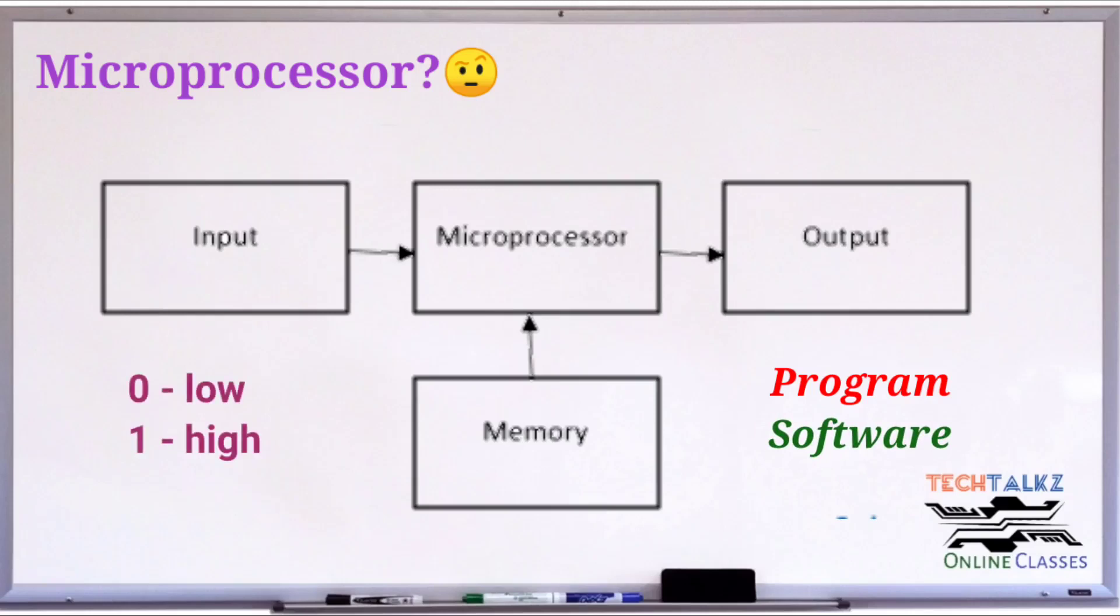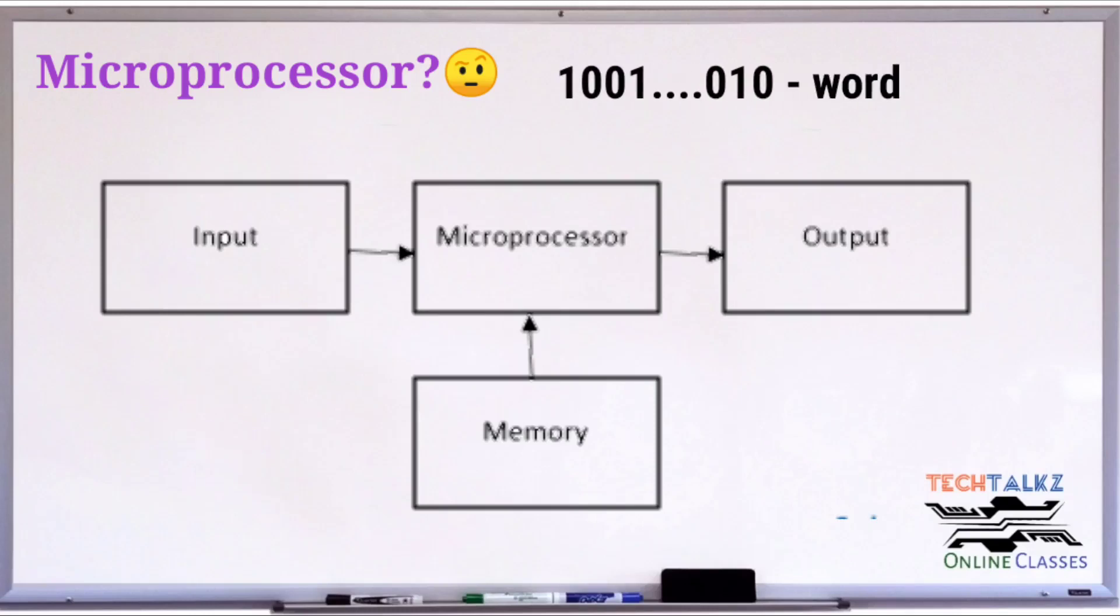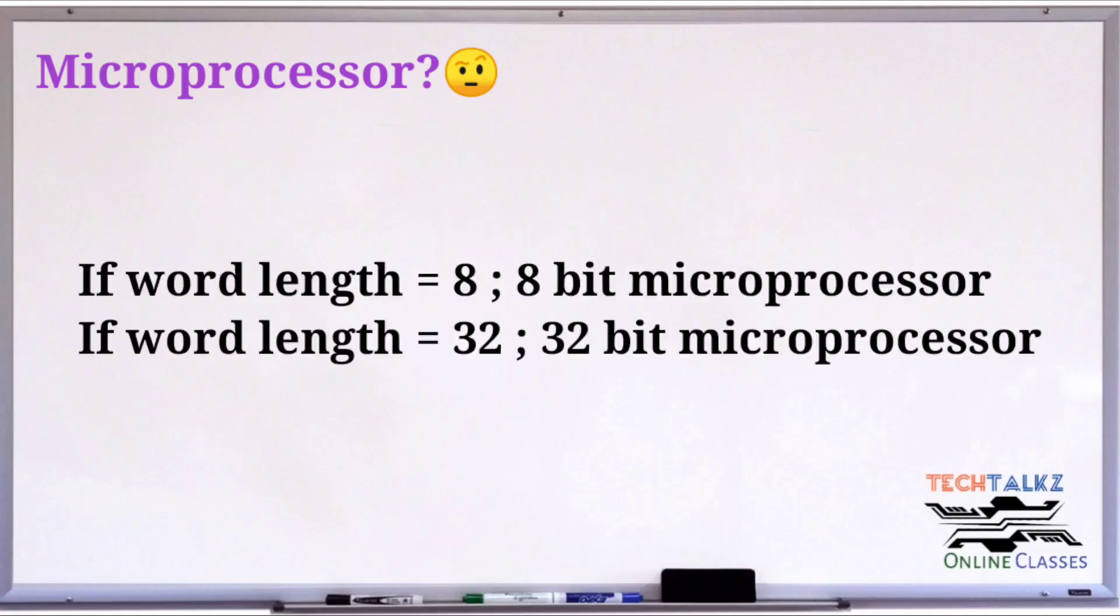Normally, zero represents a low voltage and one represents a high voltage. Each microprocessor recognizes and processes a group of bits called the word. Microprocessors are classified according to their word length. At a time, how many bits can be handled? If it can handle 32 bits, it is called a 32-bit microprocessor.